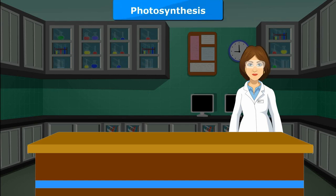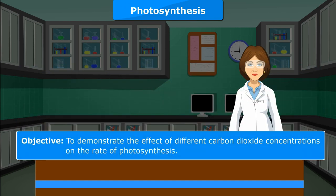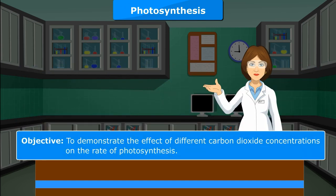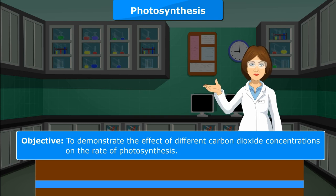Photosynthesis Experiment 5. Objective: To demonstrate the effect of different carbon dioxide concentrations on the rate of photosynthesis.